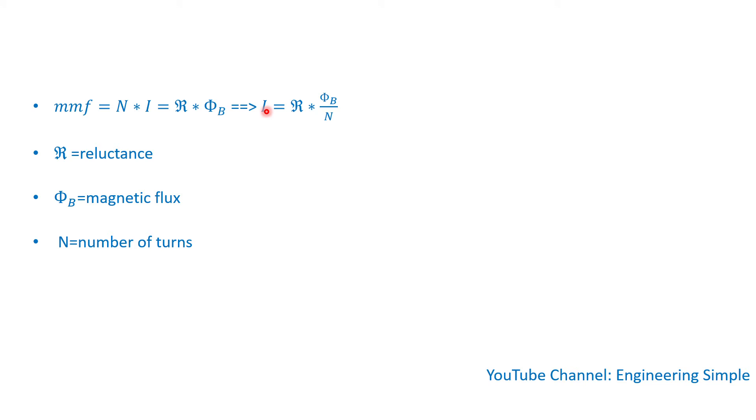So if reluctance is higher, you would need more excitation current for the rated flux to flow.